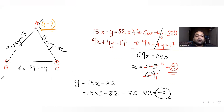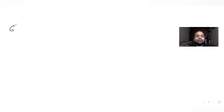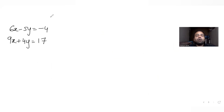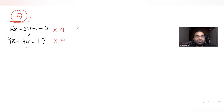Now let's find the other vertex P, which is the intersection of the lines 6x minus 5y equal to minus 4 and 9x plus 4y equal to 3. Solving these two simultaneously, I'll multiply the first by 4 and the second by 5 to make the coefficients of y the same.